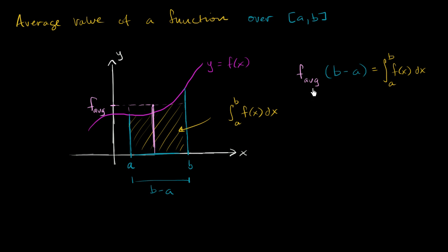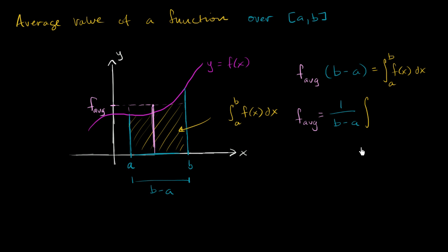And so if we divide both sides by b minus a, the function's average is going to be equal to one over b minus a times the definite integral from a to b of f of x dx.